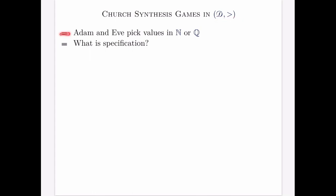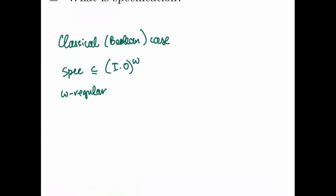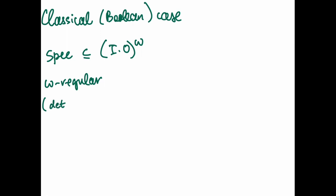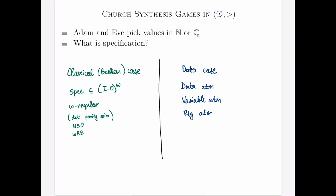In this case, Adam and Eve pick values in the domain of natural numbers or rational numbers. The important question is: what is the specification? In the classical Boolean case, a specification is a subset of input-output letters and is usually considered to be omega-regular. There, we have the luxury that it can be represented by, for example, a deterministic parity automaton, by monadic second-order logic, or by omega-regular expressions, and all these formalisms are equivalent. In the case of data specifications, there are many different non-equivalent formalisms, such as data automata, variable automata, and register automata.